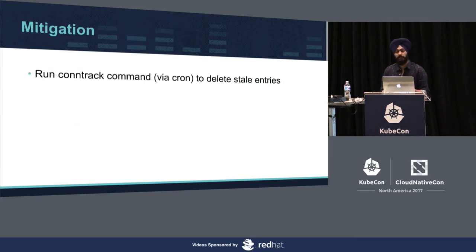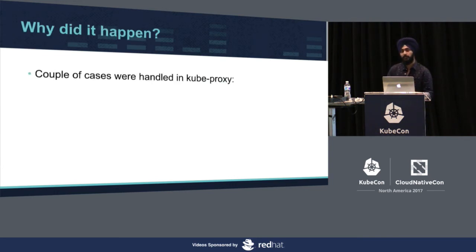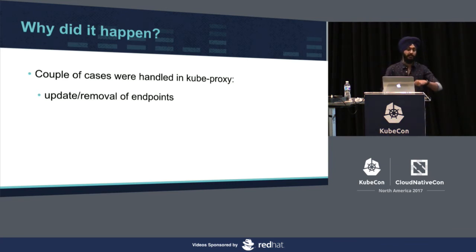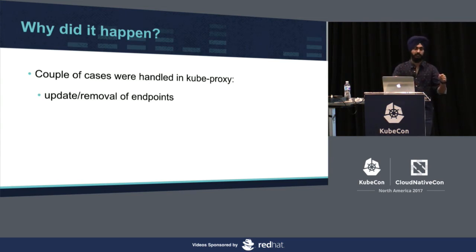To immediately mitigate, we ran the conntrack command we saw earlier but replaced the -L flag with -D, which deletes those entries. Then we modified kube-proxy to run a control loop that would flush all these stale entries, and it worked. It turned out to be a bug in kube-proxy: there were cases handled for update or removal of endpoints — when a new endpoint is added it's added to IP tables, when removed it's removed and entries flushed. But the problem was when there is only one pod, there would be an empty endpoint set at some point, flushing conntrack — but immediately someone would send a metric and create a new entry, and when the new endpoint was added back, kube-proxy would only modify IP tables without flushing the stale conntrack entries.